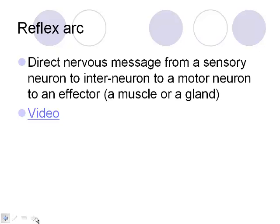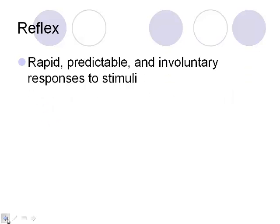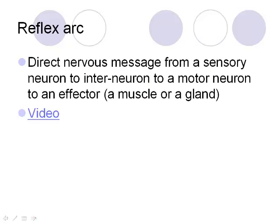A reflex arc: a reflex is a rapid, predictable, involuntary response to stimuli. The stimulus is some sort of input — something you see or touch. It happens quickly, the result is predictable, and it's involuntary — you're not consciously thinking about it.